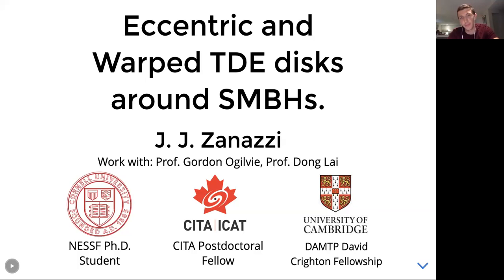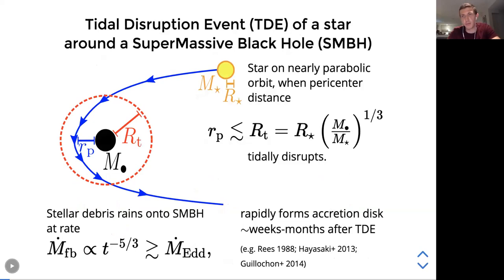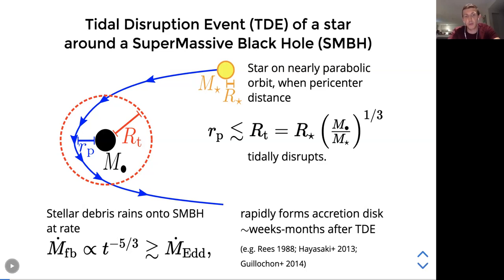I'll start by briefly reviewing what a tidal disruption event actually is. When a star approaches a supermassive black hole on a highly eccentric, nearly parabolic orbit, and the pericenter distance is less than roughly the tidal radius — where the tidal force exerted on the star by the black hole's gravity exceeds the star's own self-gravity — the star tidally disrupts. After this event, a rain of stellar debris comes back down onto the supermassive black hole, decaying with the characteristic t to the minus five-thirds power law at a highly super-Eddington rate at early times.